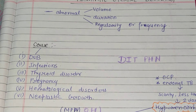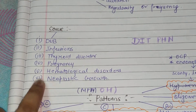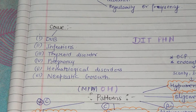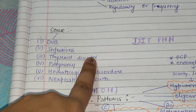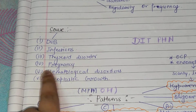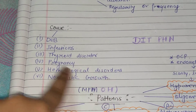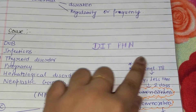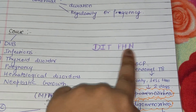Next, what are the causes of Uterine Bleeding? First is D.U.B. — that is Dysfunctional Uterine Bleeding — then Infections, Thyroid Disorder, Pregnancy, Hematological Disorder, and Neoplastic Growth. To remember these, use the mnemonic D.I.T.P.H.N.